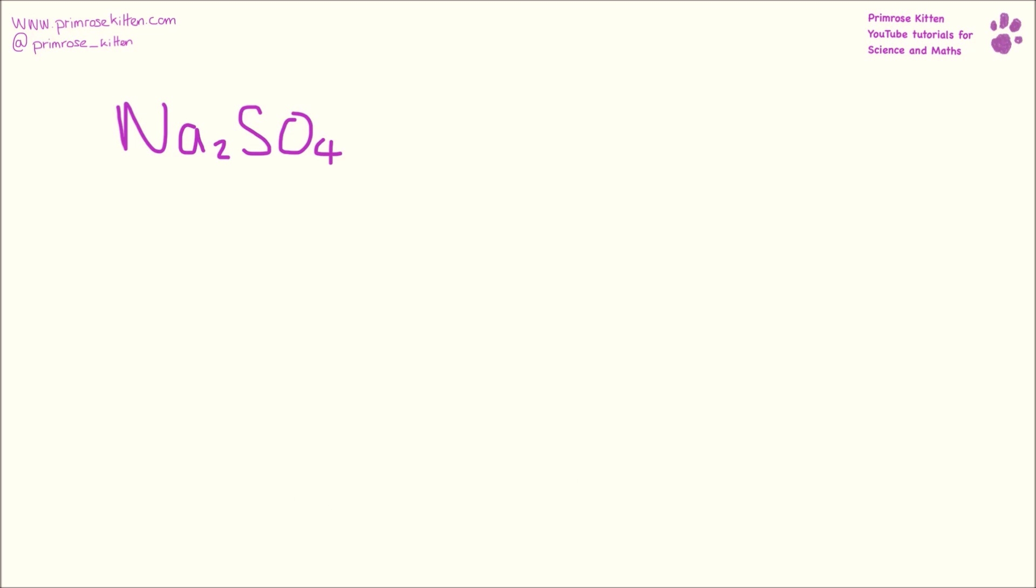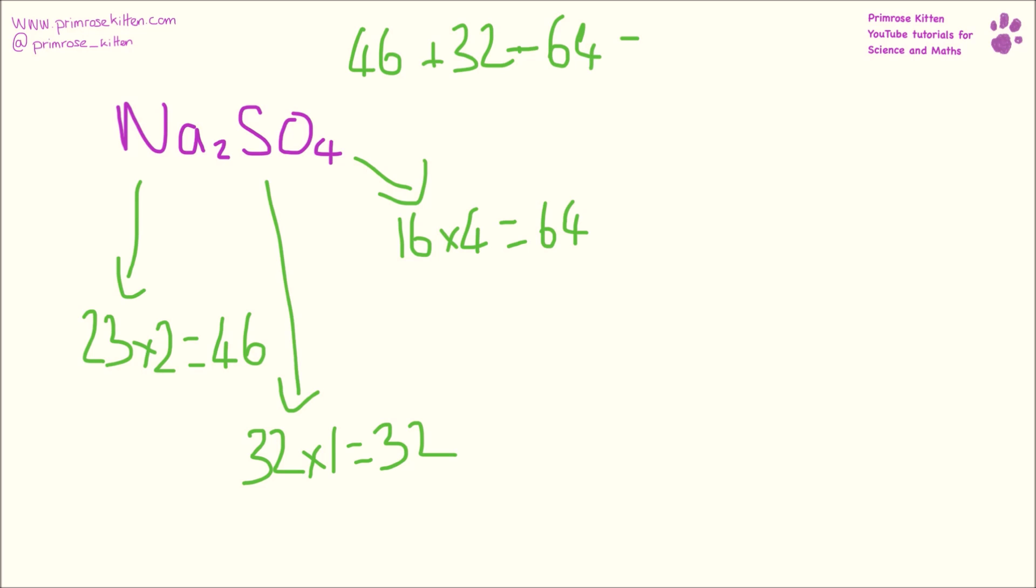Here we have sodium sulfate Na₂SO₄. Sodium has a mass of 23 and there are two of them, giving us 46. Sulfur has a mass of 32 and there's one sulfur, giving us 32. Oxygen has a mass of 16 and there are four of them, giving us 64. 46 plus 32 plus 64 gives us 142 as the total mass of sodium sulfate.